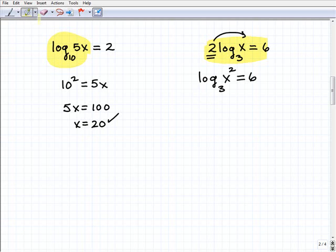Now you have the log all by itself, nothing in front of it, isolated. So now go ahead and write yourself the equivalent exponential equation. So what you'll get is x squared equals three to the sixth power. This is the base. Remember bacon and eggs. So three to the sixth power is equal to x squared. So take a moment and solve that for x and I'll do the same.